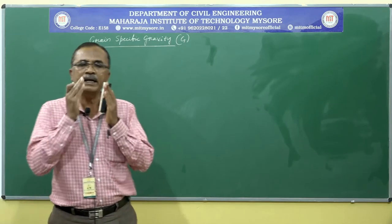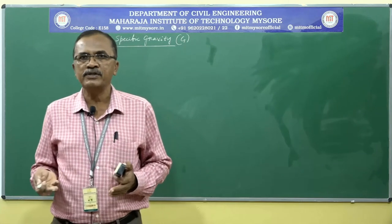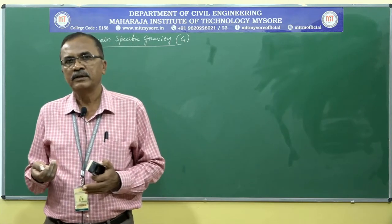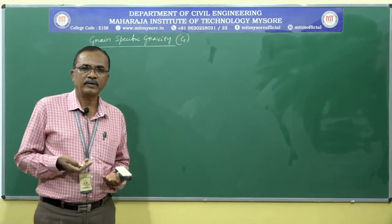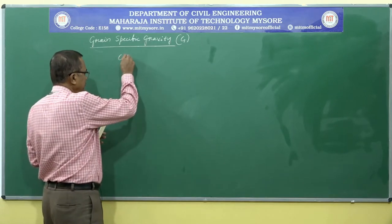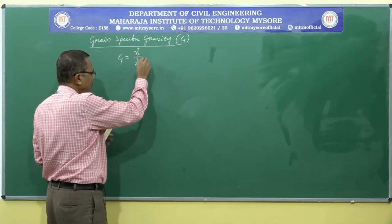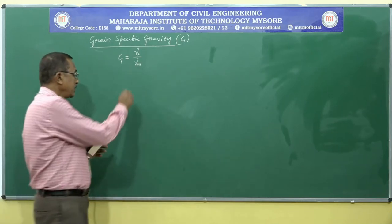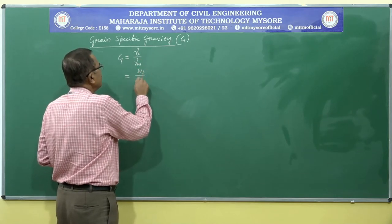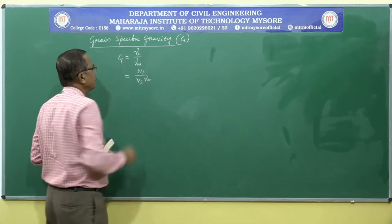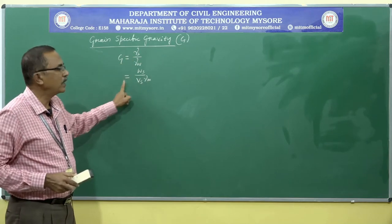It is an important index property which can be used to determine other properties such as void ratio, degree of saturation, unit weight, water content, etc. As per the definition, G is equal to the unit weight of soil solids divided by the unit weight of water. This can also be written as G = (Ws / Vs) / γw.